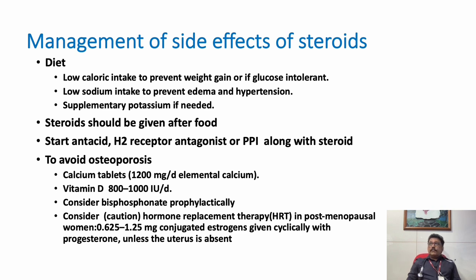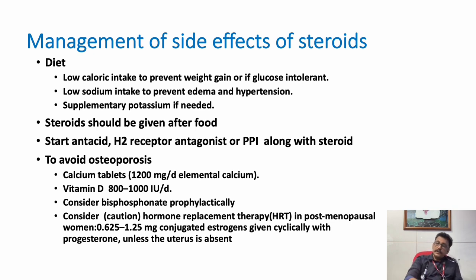Whenever we start steroids for a longer period, we have to tackle the side effects. Advise the patient to take lesser salt, lesser water, and reduce sugar intake — these are important steps for patients on chronic steroid use. Diet control is very important to avoid hypertension and diabetes. To prevent GI ulcers, use proton pump inhibitors or H2 receptor blockers. To prevent osteoporosis, give calcium, vitamin D, bisphosphonates — zoledronic acid or alendronate.